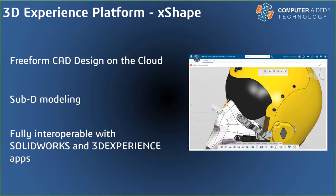X-Shape is a browser-based freeform design tool that can be accessed virtually anywhere on any device. It uses subdivision, or sub-D, modeling for creating stylized organic geometry faster than traditional tools could. With sub-D modeling, geometry is pushed and pulled like digital clay to reach desired forms. X-Shape is fully interoperable with SolidWorks Desktop CAD and X-Design, as we'll see in this presentation.